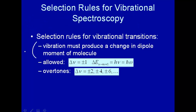So that's one gross selection rule to consider. Molecules whose normal modes don't produce a change in the dipole moment will not be, as they say, infrared active. Even though they are normal modes, they won't produce a peak in the absorption spectrum.